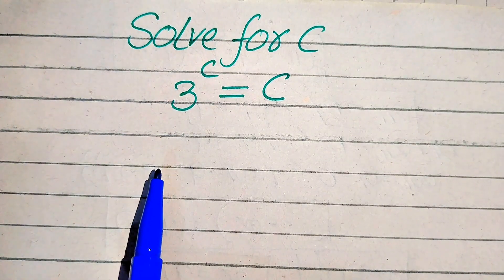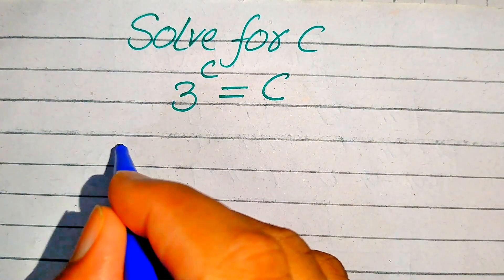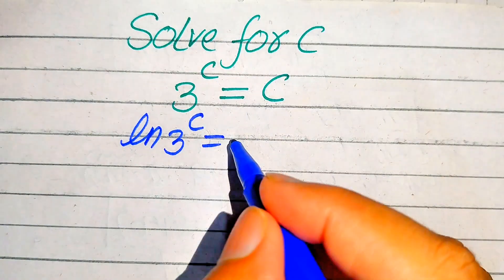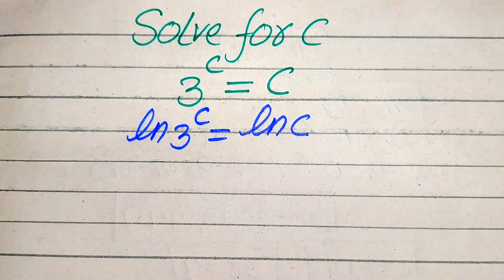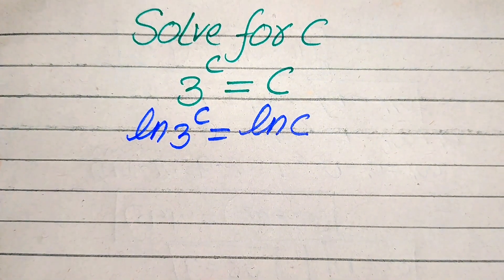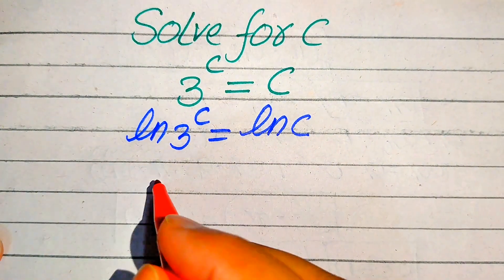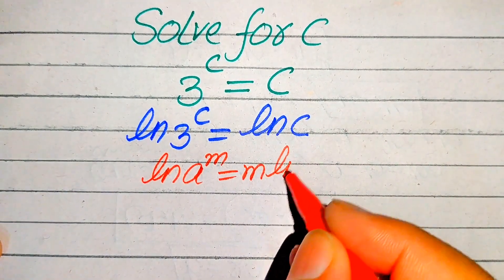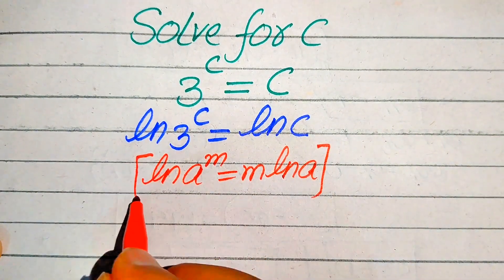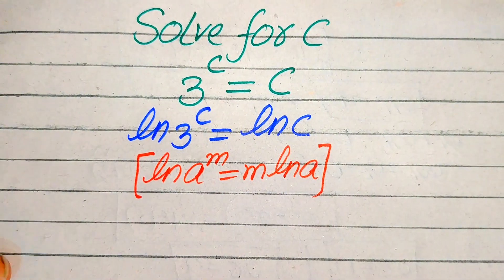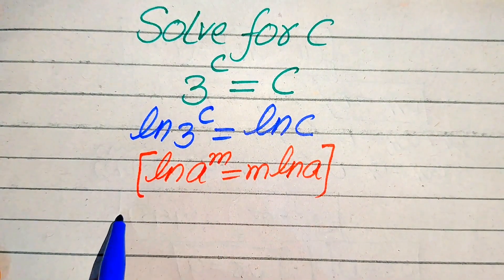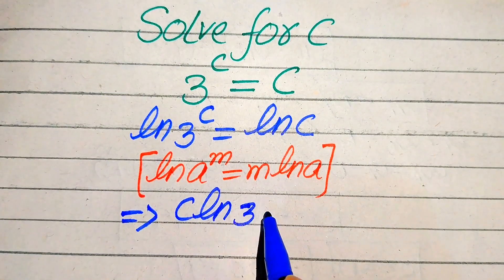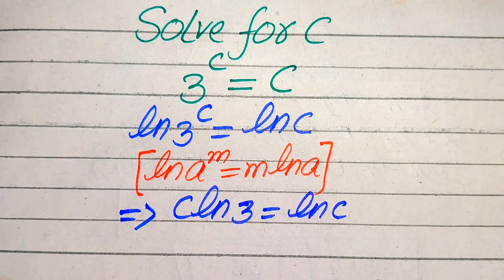In order to deal with the exponential equation, we need to take the log on both sides. So we take the natural log on both sides. After taking the log it will be written as log of 3 to the power of c equals log of c. We use the property of log: log of a to the power of m equals m times log a. According to this property, we write the exponent to the front, so it becomes c times log 3 equals log of c.